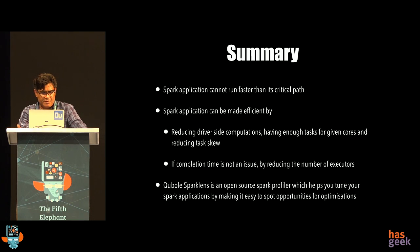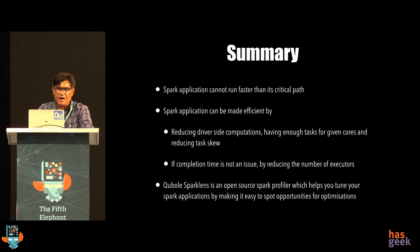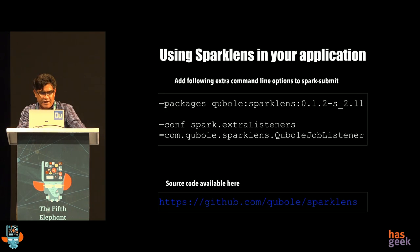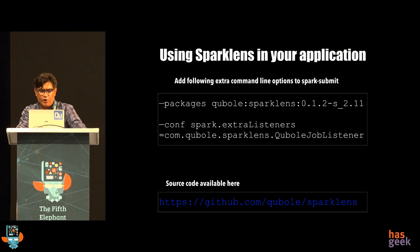In summary: a Spark application cannot run faster than its critical path. A Spark application can be made efficient by reducing driver-side computation, having enough tasks for the cores, and reducing task skew. If completion time is not an issue, reduce the number of executors. This is open source — when you run your Spark submit, add two parameters: --packages and spark.extraListeners, and when the job completes you'll see all the output from Spark Lens. The code is available if you want to try it out, contribute, or change anything.